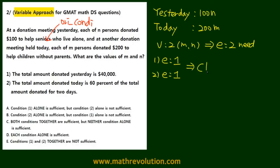This makes it likely that C is going to be our answer. Let's see if that's the case. Using both conditions together, 100n is equal to 40,000, meaning that n is equal to 400.